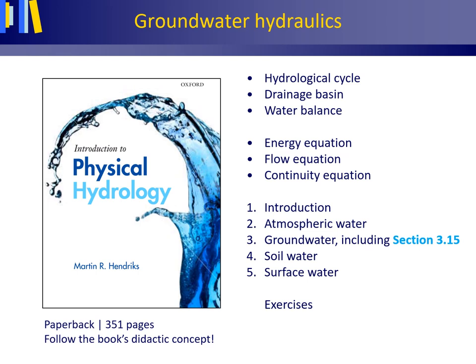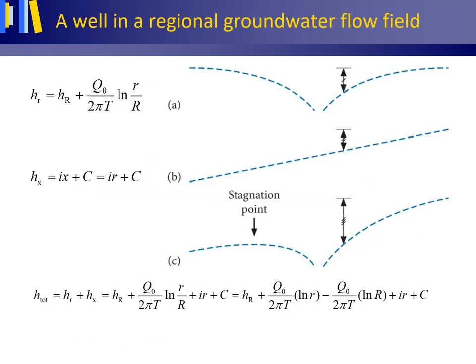This is the last lecture on groundwater hydraulics. Let us now describe the hydrological flow processes for a well in a regional groundwater flow field. For this we will use the Dupuis equation that was introduced in the preceding lecture.